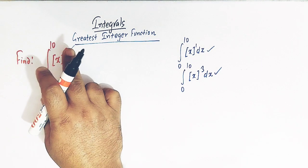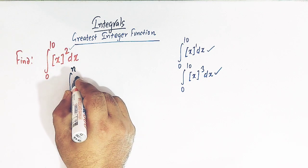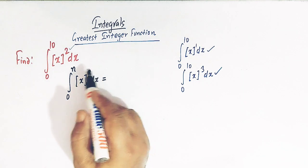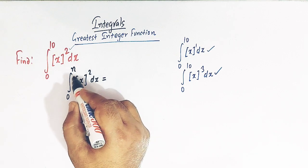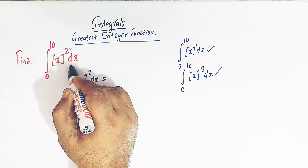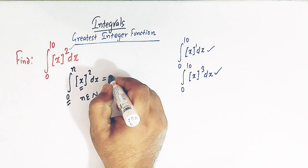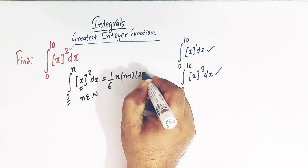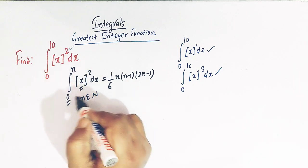To evaluate this type of integral we make use of this formula: suppose we have the integral from 0 to n of the square of greatest integer of x, where n belongs to the set of natural numbers. The direct formula for evaluating this integral is 1 over 6 times n times (n minus 1) times (2n minus 1).